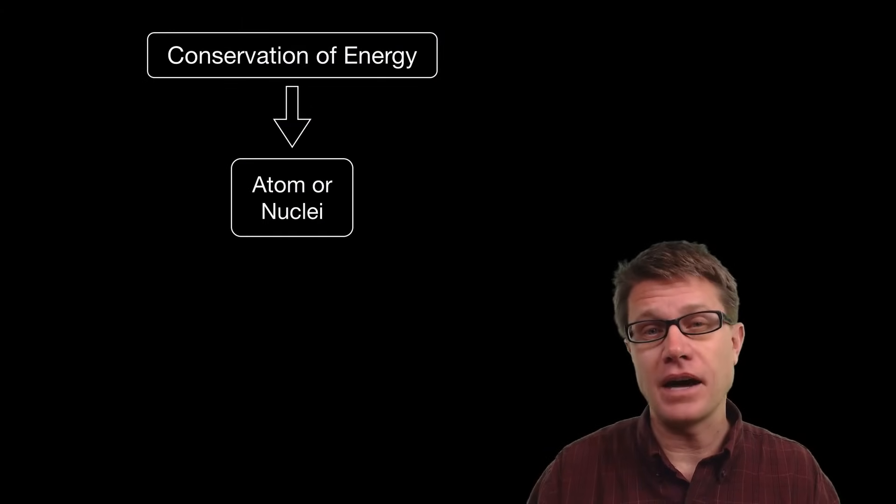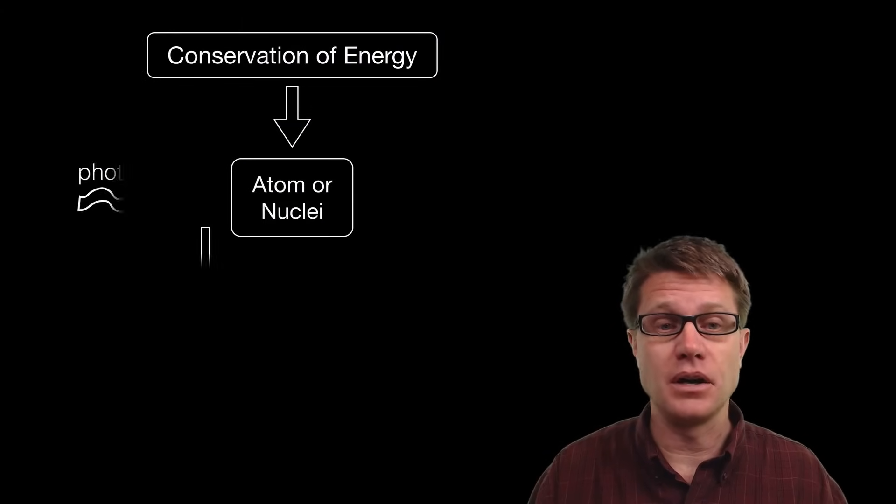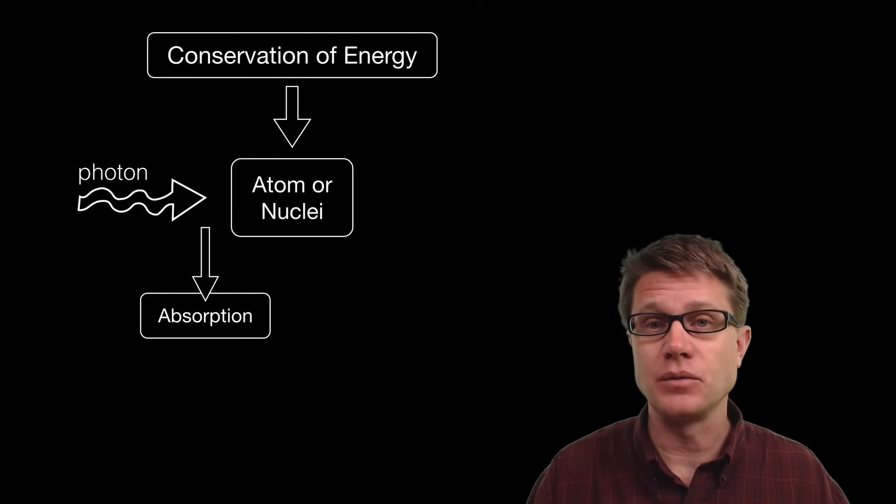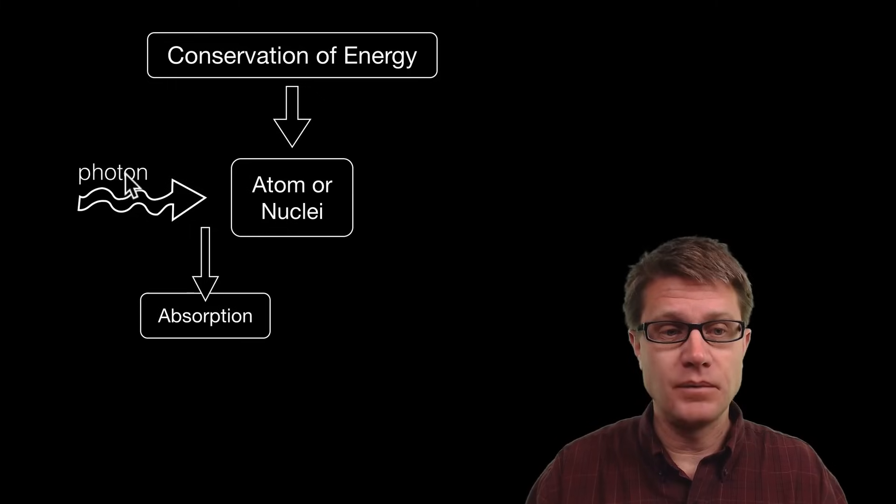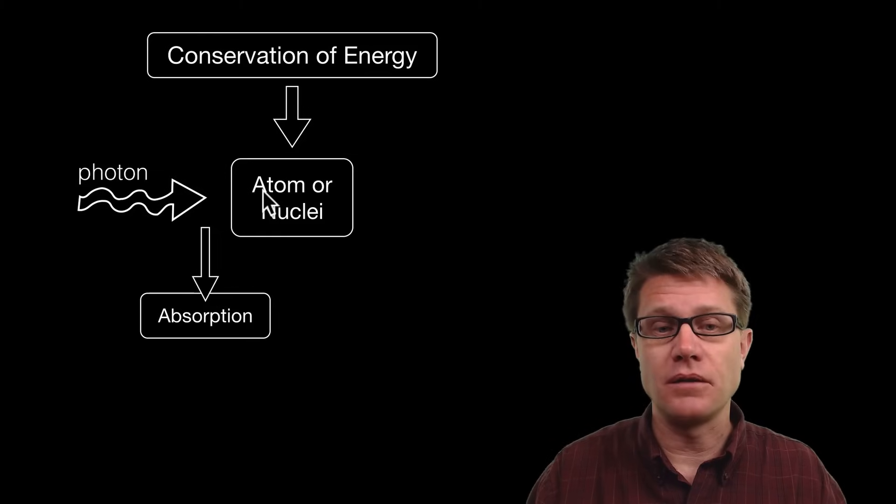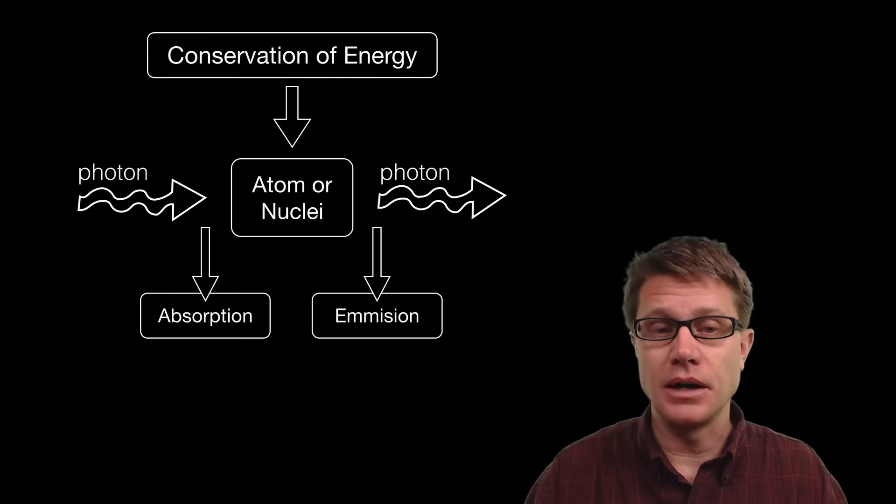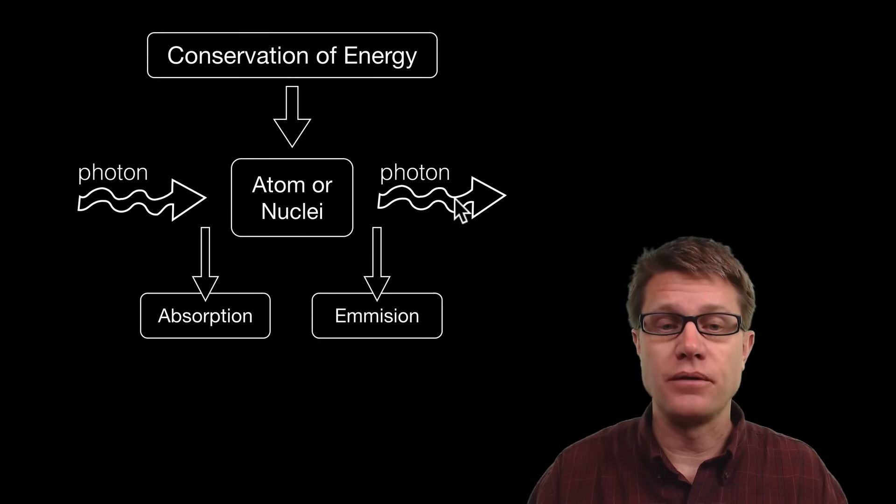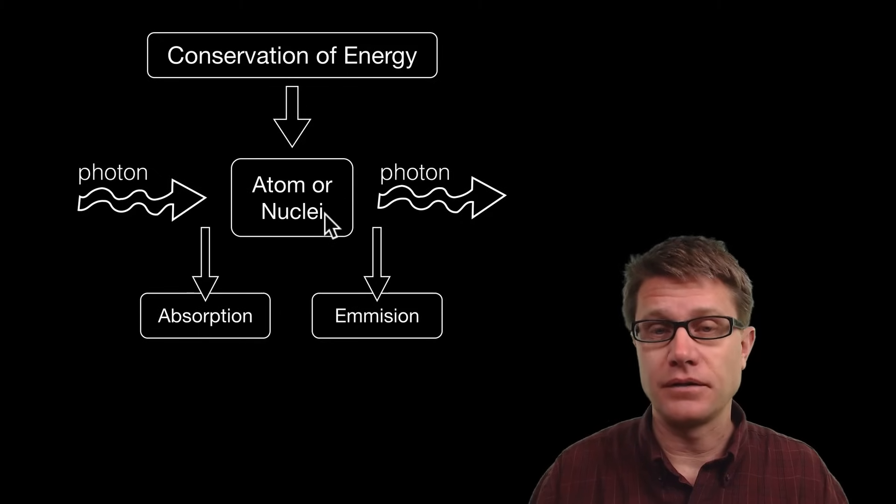Conservation of energy in an atom or in a nuclei when it absorbs a photon. So we call that absorption. The amount of energy in the photon and the atom or nuclei before absorption is equal to the amount of energy inside the atom or nuclei after absorption. And the same thing applies with emission. As we give off that photon energy is conserved. The amount of energy we had in the atom or the nuclei before is equal to both the photon and atom or nuclei after.